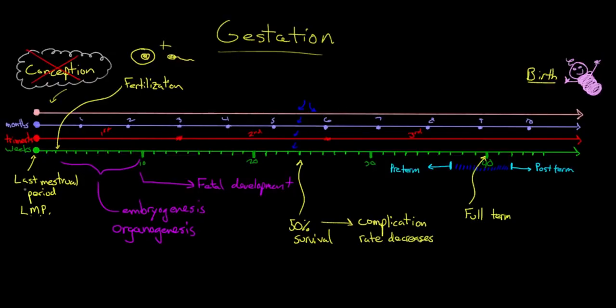You start counting at the last menstrual period at week zero. Fertilization happens at week two. You go through embryogenesis, organogenesis, fetal development along with a period of growth and further development before birth at the end of pregnancy.